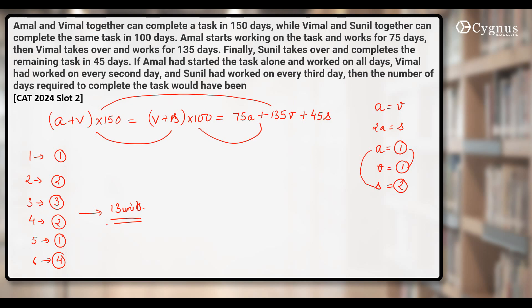Now they need to finish the whole work. What's the total work? I know that this is also total work. Values of A and V are one and one. When you put one plus one into 150, you get 300 units.